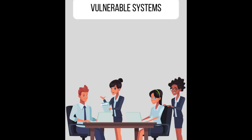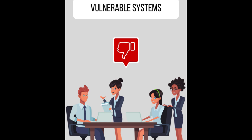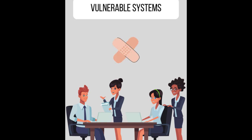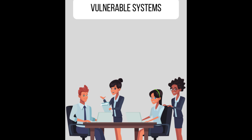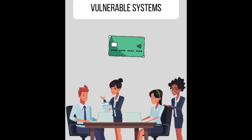Attackers also pick on vulnerable systems — systems that have bad access control or are misconfigured. This might be because someone isn't installing patches or updates and is using old systems. The first type of system attacked is data systems, which contain critical data such as credit card numbers. In 2021, there were over 37 billion records lost.